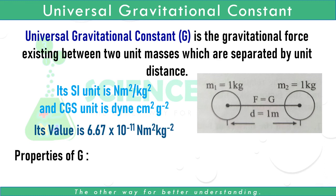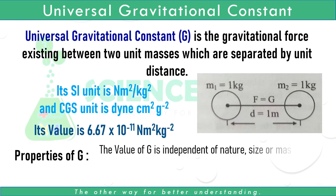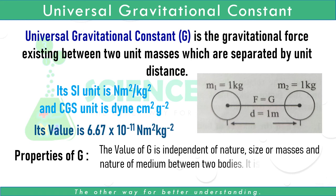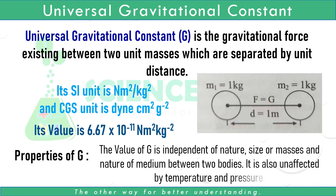There are certain properties of the Universal Gravitational Constant. The value of G is independent of the nature, size, or masses of the bodies and the nature of the medium between them. It is also unaffected by temperature and pressure.